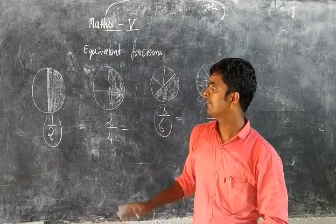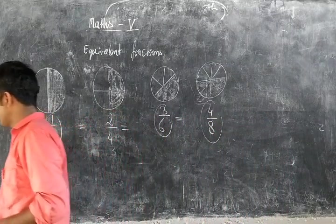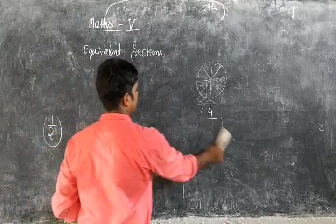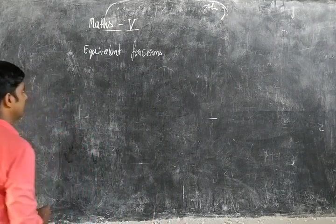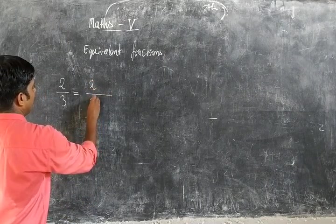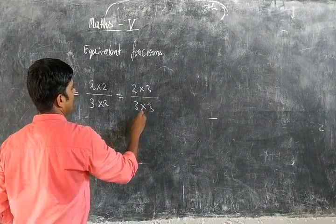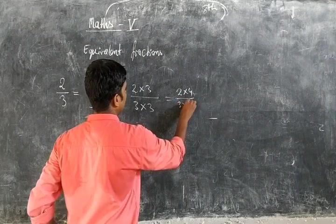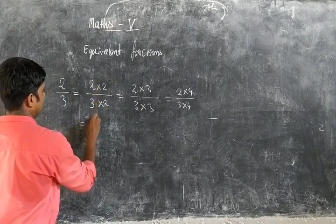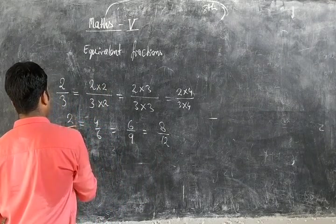If we want to find equivalent fractions for 2 by 3, we can multiply the numerator and denominator by the same number. Multiply numerator and denominator both by 2, then by 3, then by 4, and you can multiply by 5, 6, 7, and more numbers. The results are 4 by 6, 6 by 9, 8 by 12. These are the desired equivalent fractions of 2 by 3.